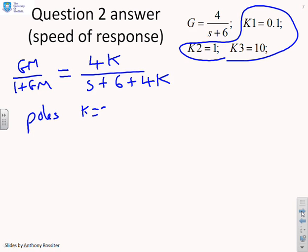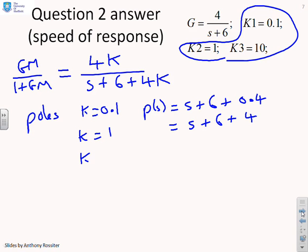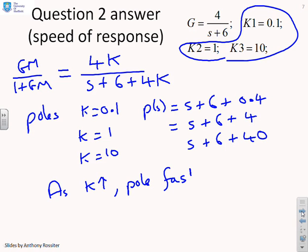So k equals 0.1, then your pole polynomial is going to be s plus 6 plus 0.4. If I choose k equals 1, then your pole polynomial will be s plus 6 plus 4. And if I choose k equals 10, I will get s plus 6 plus 40. So fairly clearly, as k goes up, the pole gets faster. So that's the first part of the comparison. As I increase k, the pole gets faster.